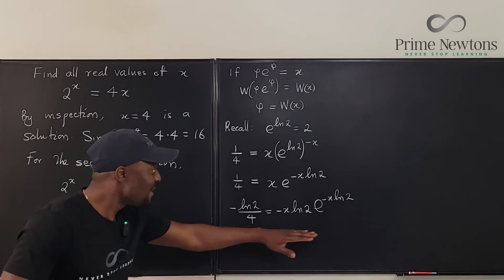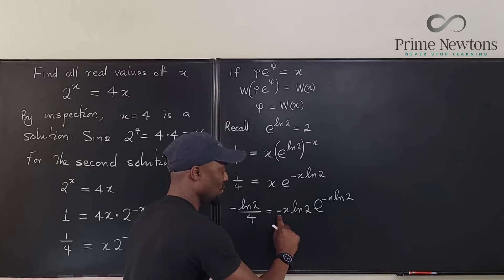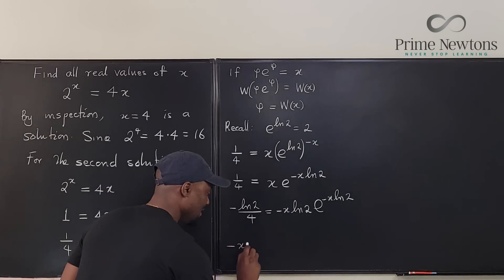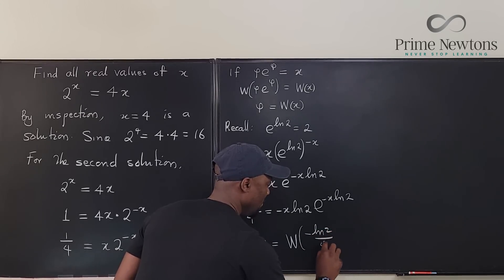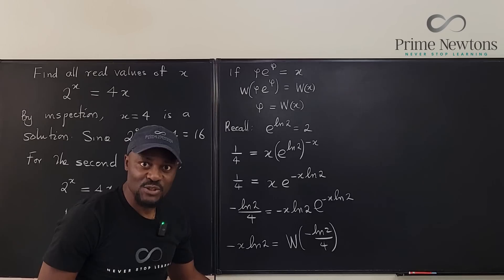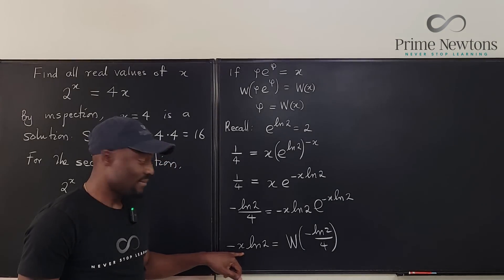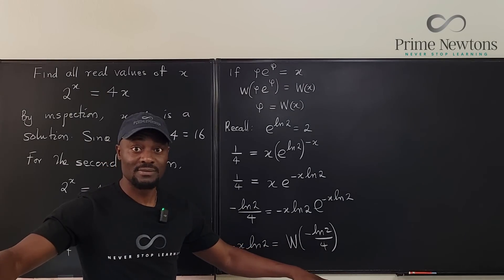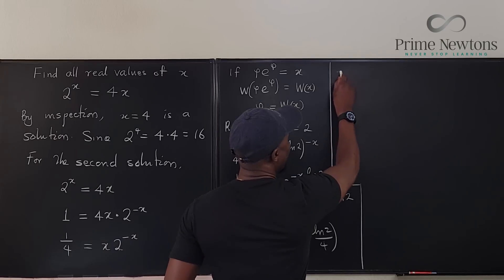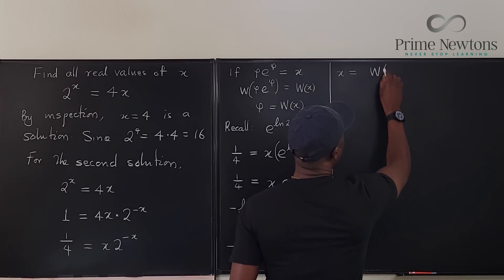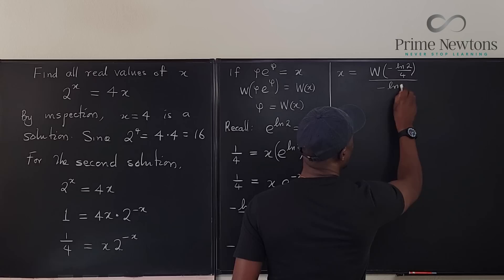Beautiful. And with this, I can take the W of both sides. If I take the W of this, take the W of this, what's going to come out of this is just the negative x ln 2. So I can say that negative x ln of 2 is equal to the W of negative ln 2 over 4. But I'm not looking for negative x ln 2. What am I looking for? I'm looking for just x. So to isolate x, I can divide both sides by negative ln 2. So x is equal to W of negative ln 2 over 4 divided by negative ln 2.